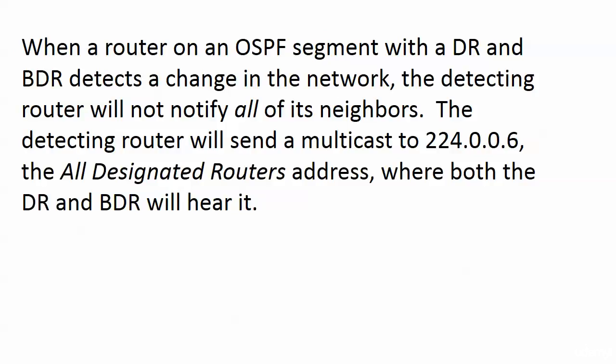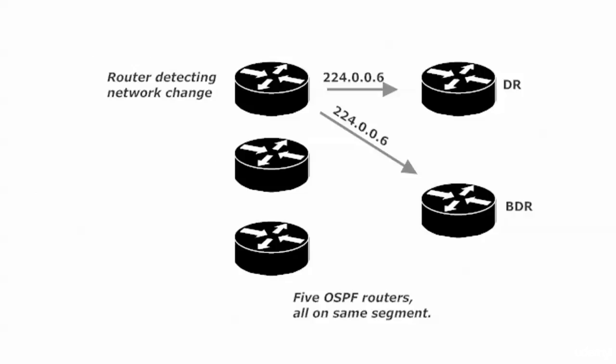When a router on an OSPF segment that has both a DR and a BDR detects a change in the network, the detecting router does not notify all of its neighbors. Instead, the detecting router sends a multicast to 224.0.0.6 - the all designated routers address - and the DR and BDR on that segment will hear it. DR others do not listen for 224.0.0.6, so that address is only for DRs and BDRs. The other routers on the segment would not know about the change yet.